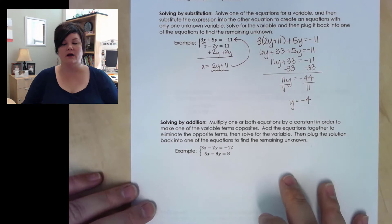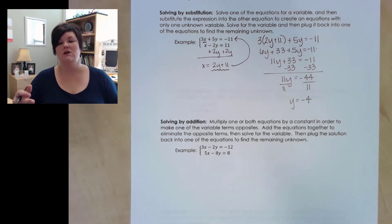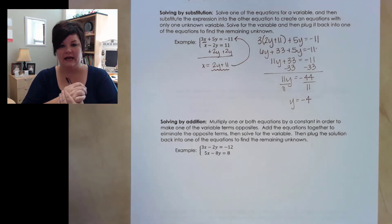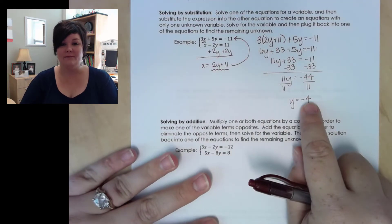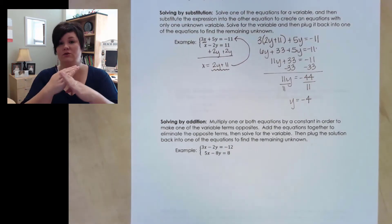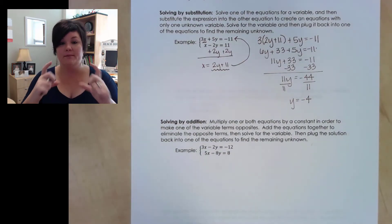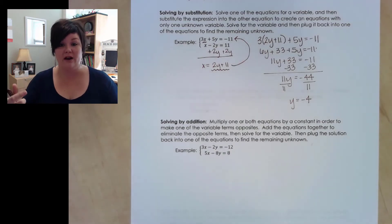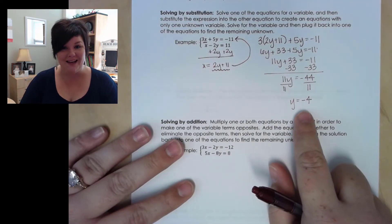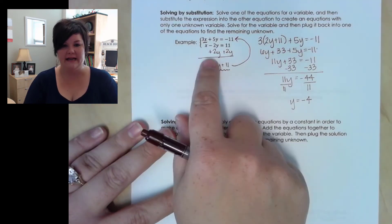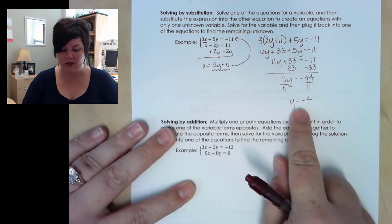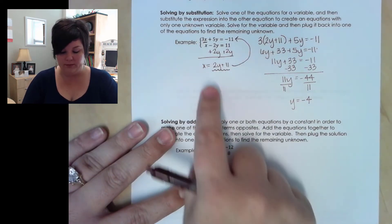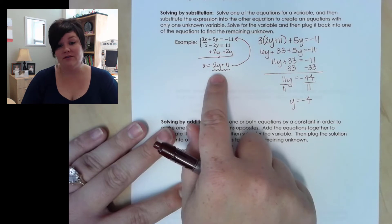When solving a system of equations, we're looking for where those two lines cross. Getting a y value means there should be a point where these two lines intersect. Because it represents a point on a graph, we want an ordered pair. Now that we know y, we're not done — we have to plug y back in to find x. You can use either of the original equations or the one already solved for x.